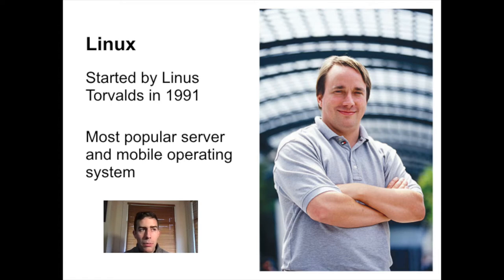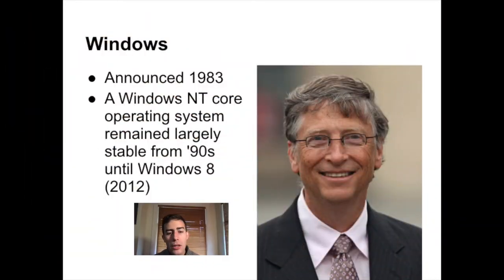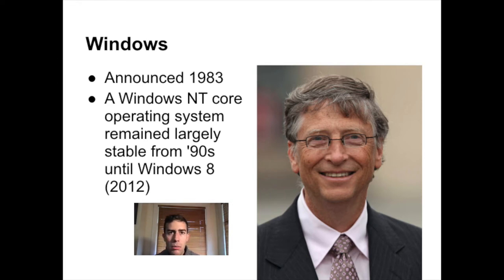Windows had emerged maybe a decade earlier. DOS came first in the early 80s, then Windows NT in the early 90s provided a comparable kernel and application programming interface to Linux's POSIX interface. That kernel remained largely stable — it didn't get a full rewrite until Windows 8 and Windows 10, around 2012. Both Windows and Linux had relatively stable APIs for a long period, with many programs written against those interfaces.